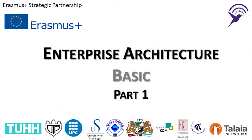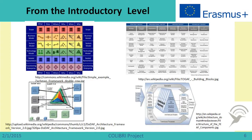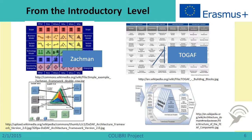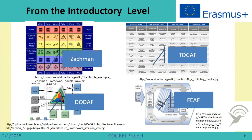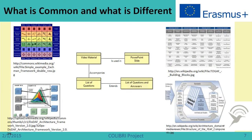Let us proceed to the first part of Enterprise Architecture Basic. In the introductory level we learned about several Enterprise Architecture Frameworks: the ZACHMAN Enterprise Architecture Framework, TOGAF, DODAF, and FEAF. The question now is what is common and what is different among these frameworks. We will discuss this using a simple example of a data structure or information object structure from the introductory part. In the middle you can see some data, and we will see how this data is represented across different Enterprise Architecture Frameworks.